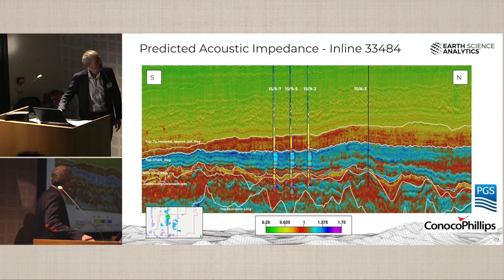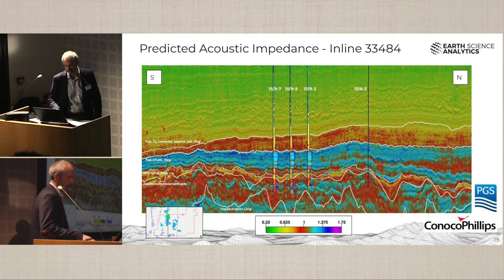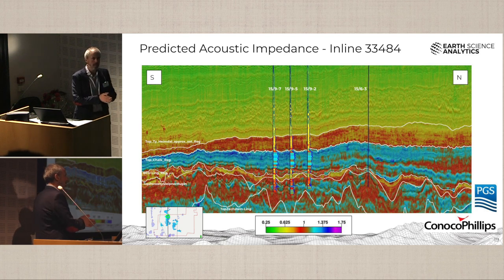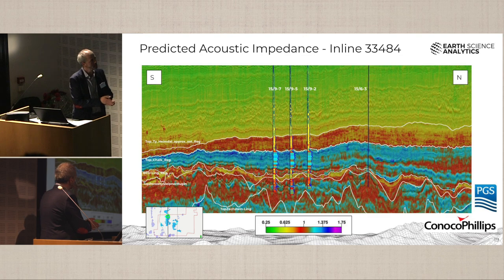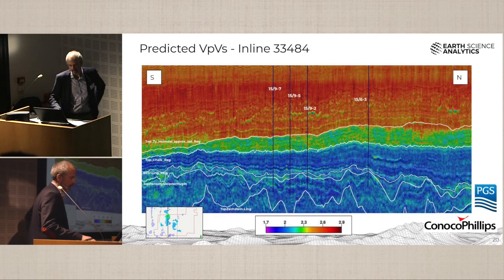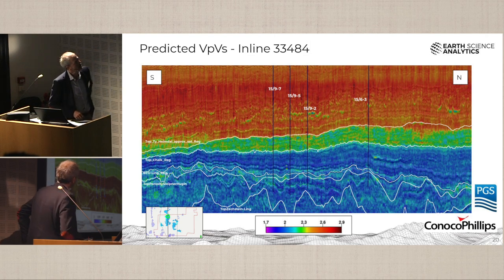Our acoustic impedance prediction also shows very high scores. We can predict the elastic properties as well — scores for elastic properties are higher than porosities, up in the 80s. We're able to reliably bring out acoustic impedance, VPVS, and density, which are all quite effective.